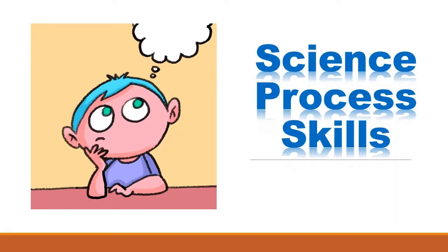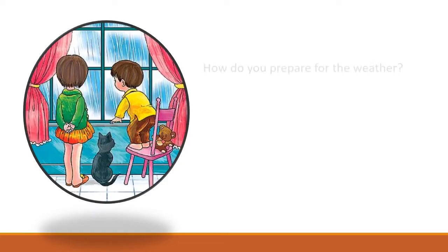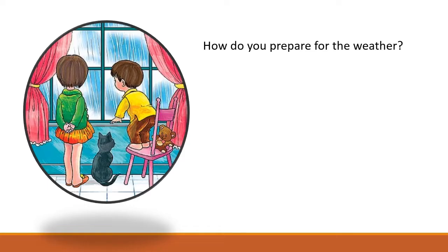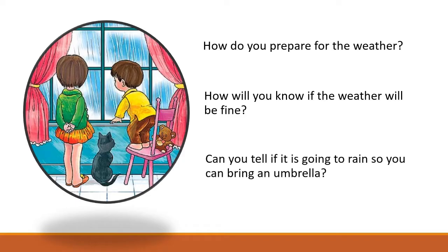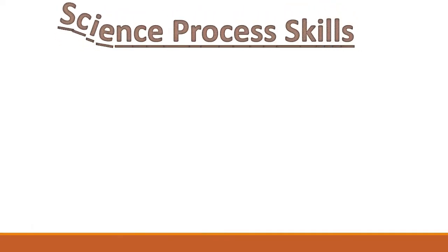Hello, everyone. Today we will discuss science process skills. Are you good at observing things around you? How do you prepare for the weather? How will you know if weather will be fine? Can you tell if it is going to rain so you can bring an umbrella? You will be able to answer these questions by observing the condition of the atmosphere and predicting what will happen next. Observing and predicting are science process skills. You will also use other skills like communicating and inferring in studying nature. These skills are needed by scientists to do their work. As a student in science, you will also work the way scientists do. What are the basic science process skills?